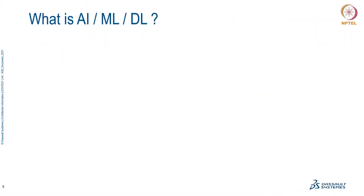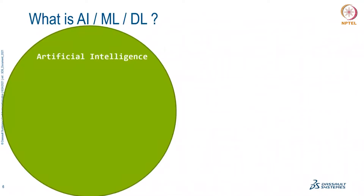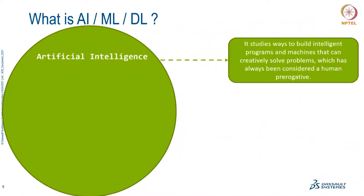There are three terms: artificial intelligence, machine learning, and deep learning. Artificial intelligence is the outermost bubble — it's a way to build intelligent systems that can think like humans. Currently, thinking is a speciality of human beings, and we try to simulate this behavior in machines. This is the whole field where AI comes into picture — it's the superset of everything, and inside it all the different types of algorithms reside.